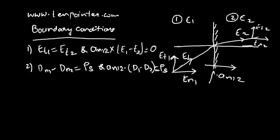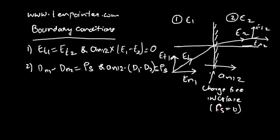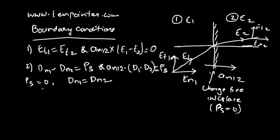If there is no charge at the interface, that is called a charge-free interface, and ρs becomes equal to zero. When ρs equals zero, we can say Dn1 equals Dn2. In general, boundary conditions relate Et1 = Et2 and Dn1 minus Dn2 = ρs. So Dn1 = Dn2 applies only when ρs = 0.